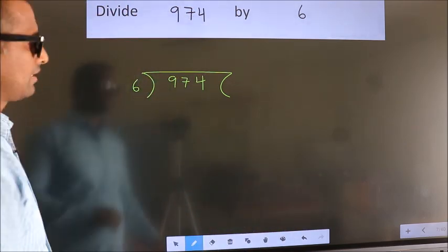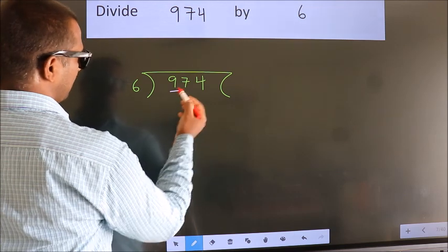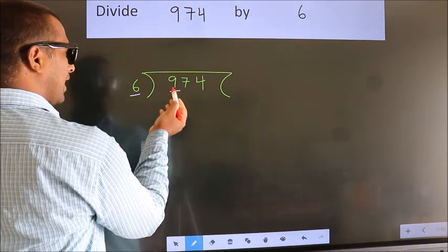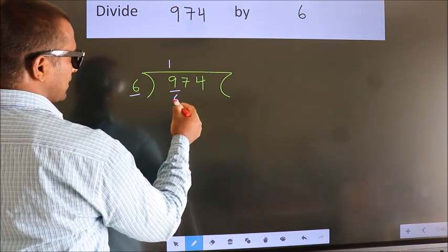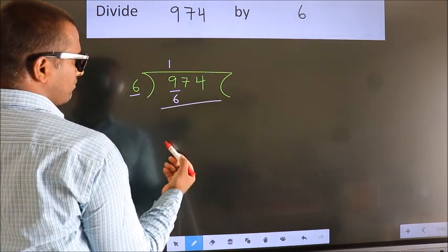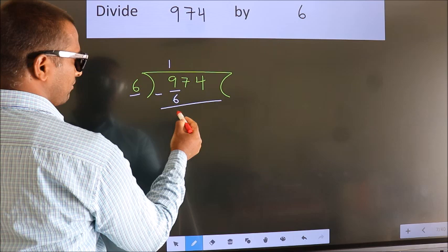Next. Here we have 9, here 6. A number close to 9 in 6 table is 6 once 6. Now we should subtract. We get 3.